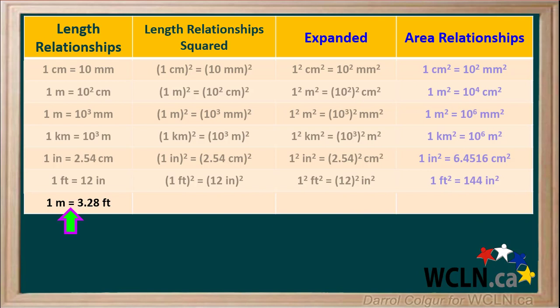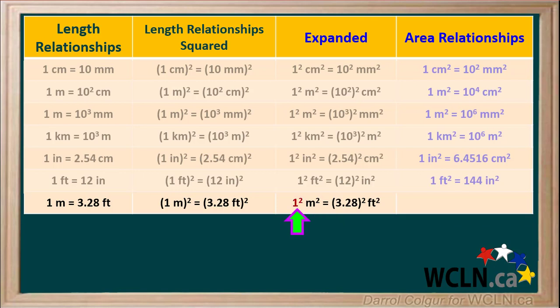Lastly, we'll compare meters and feet. One meter is approximately three point two eight feet. Squaring both sides and expanding, one squared equals one and three point two eight squared is about ten point seven six. So an area of one square meter is approximately equal to ten point seven six square feet.